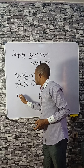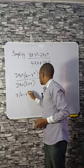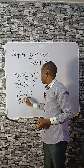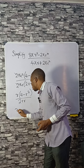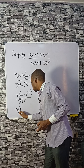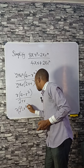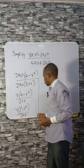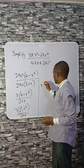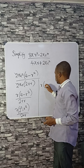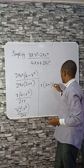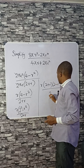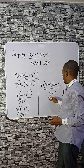Now we can cancel to get what is left: r times (4 minus r squared) divided by (2 plus r). This is a difference of two squares — if you check closely, you see that this is 2 squared minus r squared, divided by (2 plus r). Going further: r times (2 plus r)(2 minus r) divided by (2 plus r).